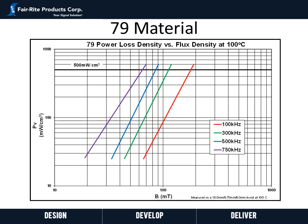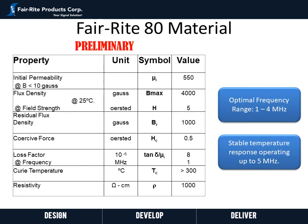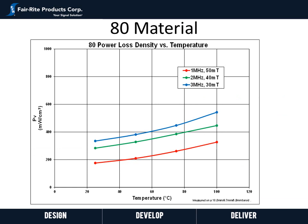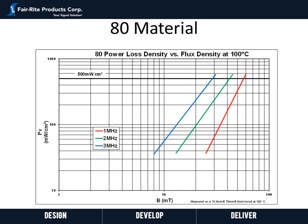Next we will look at Ferrite's newly developed 80 material. 80 material is a lower 550 perm manganese zinc material with an optimal frequency range of 1 to 4 megahertz, performing well even up to around 5 megahertz. It also has a fairly stable temperature response, as can be seen here where we are plotting power loss density over temperature for three frequencies and flux densities. In the frequency range of 1 megahertz to 3 megahertz, the power loss density is fairly stable, being lowest at 25 degrees C.